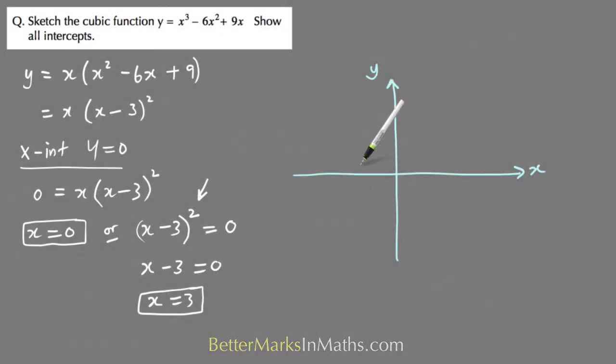Now the graph's going to be a positive x cubed shape like that because of this positive x cubed term here, and that means it's going to go up through 0 and then touch at 3. There's no restriction on the domain, so you need to put arrows on the ends of the graph and then also mark in these x intercepts. So that one at 0, this one at 3.